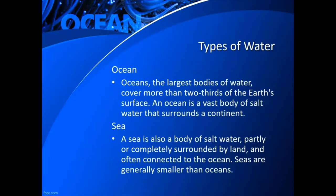This is on oceans, so let's start there. Oceans are the largest bodies of water, and they cover more than two-thirds of the Earth's surface. An ocean is a vast body of salt water that surrounds a continent. That's compared to a sea, which is also a body of salt water, partly or completely surrounded by land and often connected to the ocean. Seas are typically smaller than oceans.